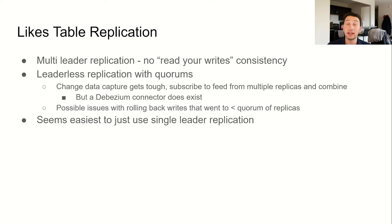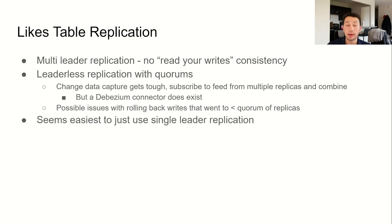In our likes table we need read-your-write consistency. This probably means that we want to avoid using something like multi-leader replication. This is because a user could send a like to one of our database leaders and then read from another and not see their like reflected. In theory we've actually got a couple of options here. We could use leaderless replication — if we use quorum consistency, we can guarantee that the set of database nodes that we write to and read from will always overlap. This means that we'll have an up-to-date value for each key on at least one of the nodes that we read from, and can use client-assigned write timestamps to determine which one is the most recent.